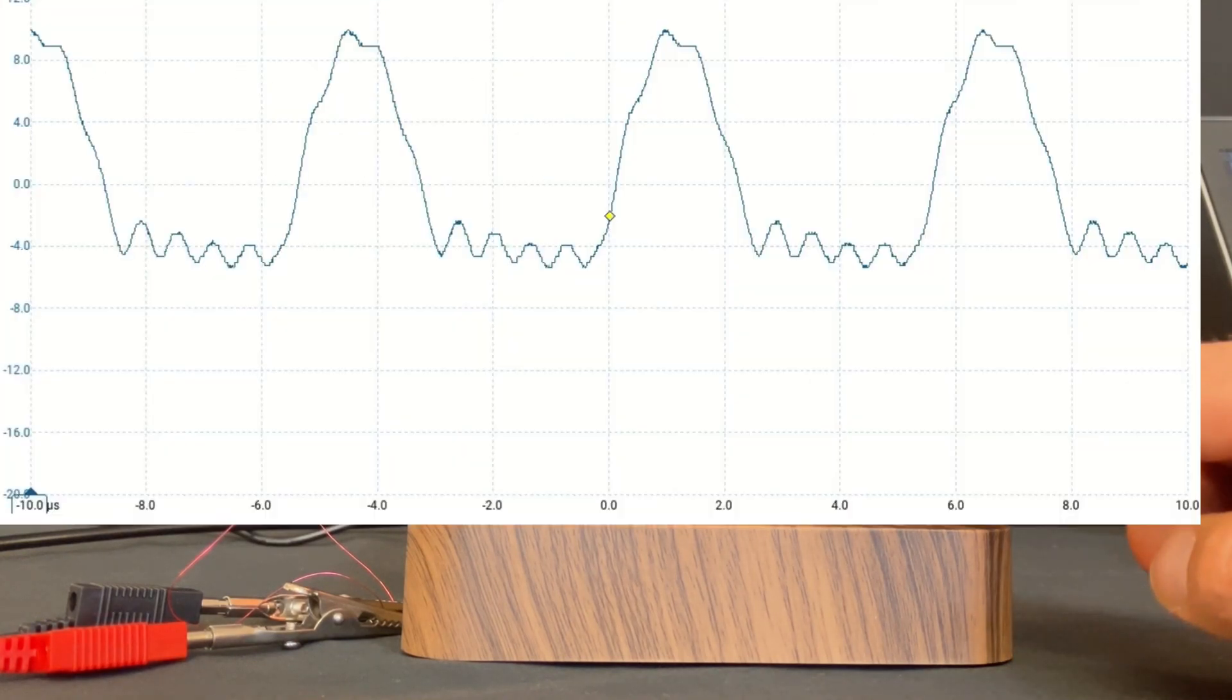If we look at this enlarged trace, we can see that the time period is a bit over five microseconds, which means the frequency is going to be a little under 200 kilohertz. And this is typical of wireless charging.